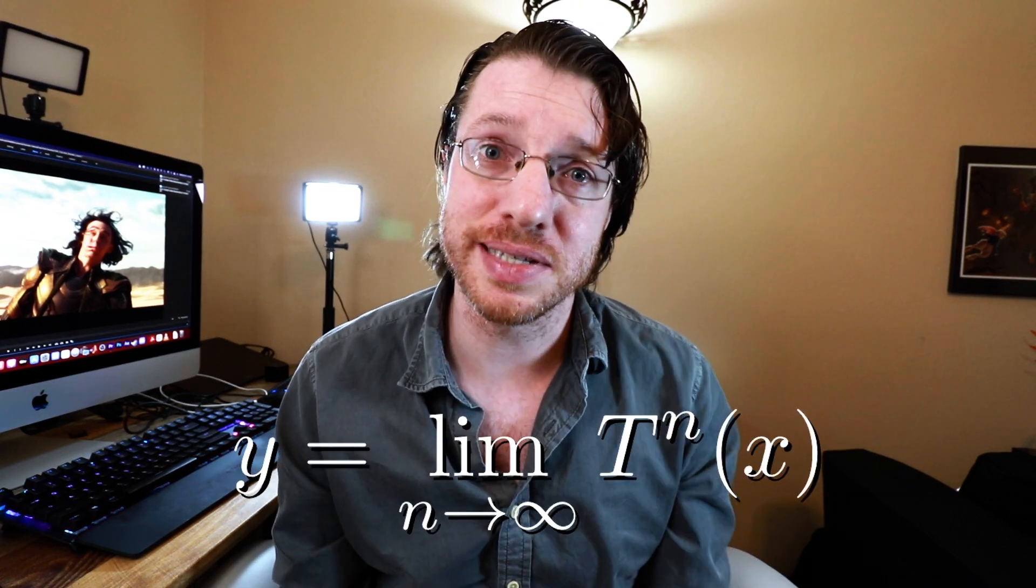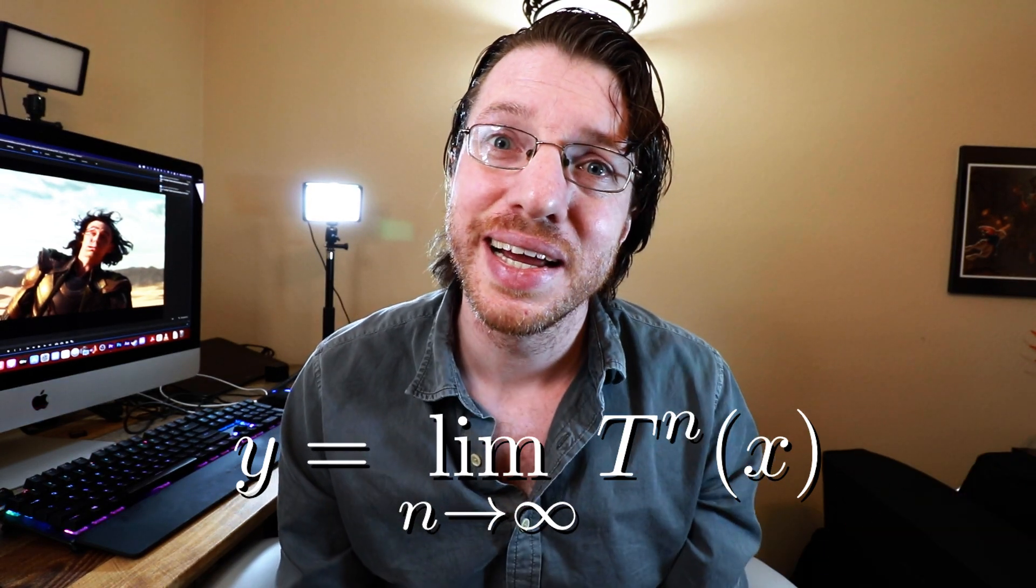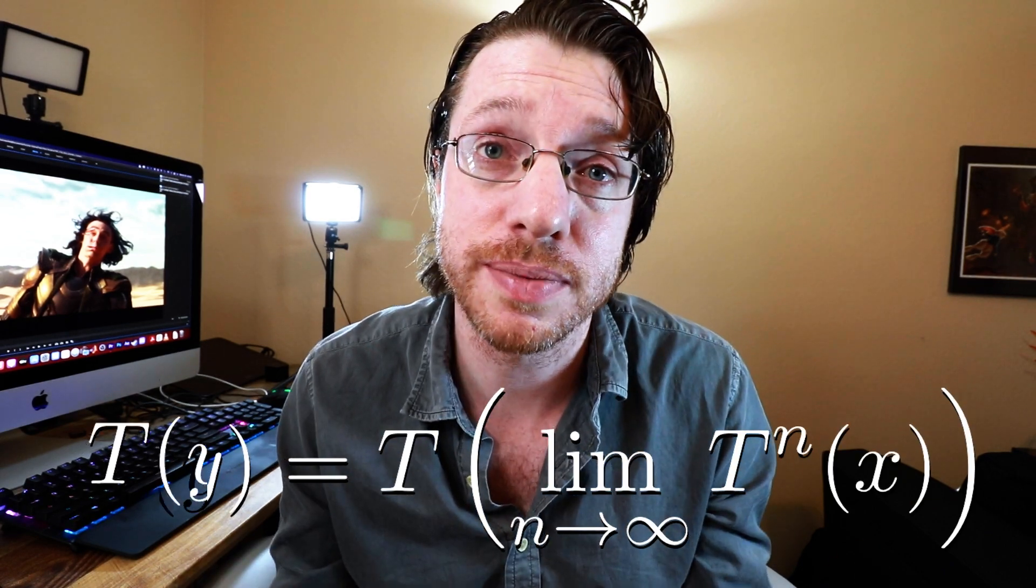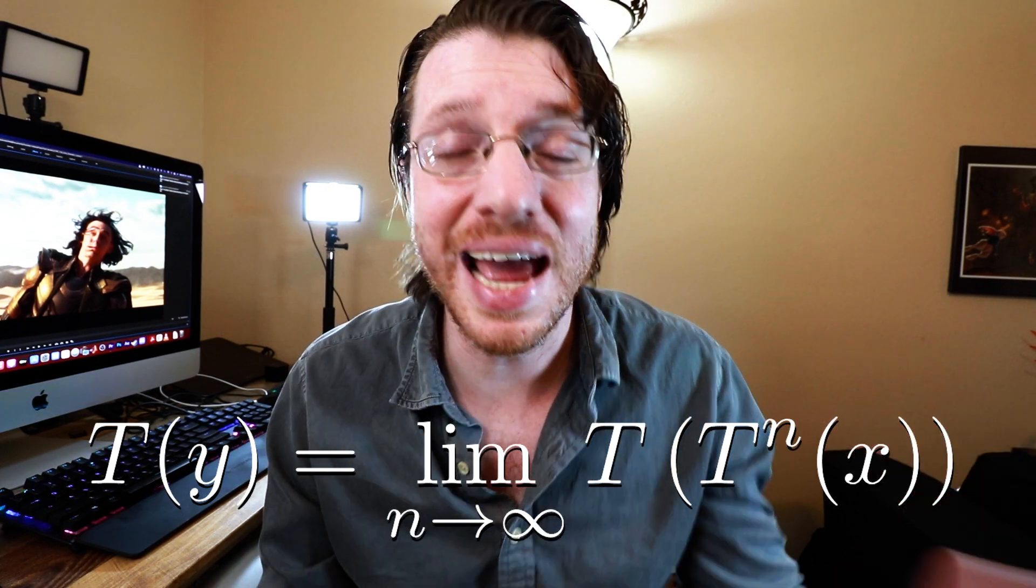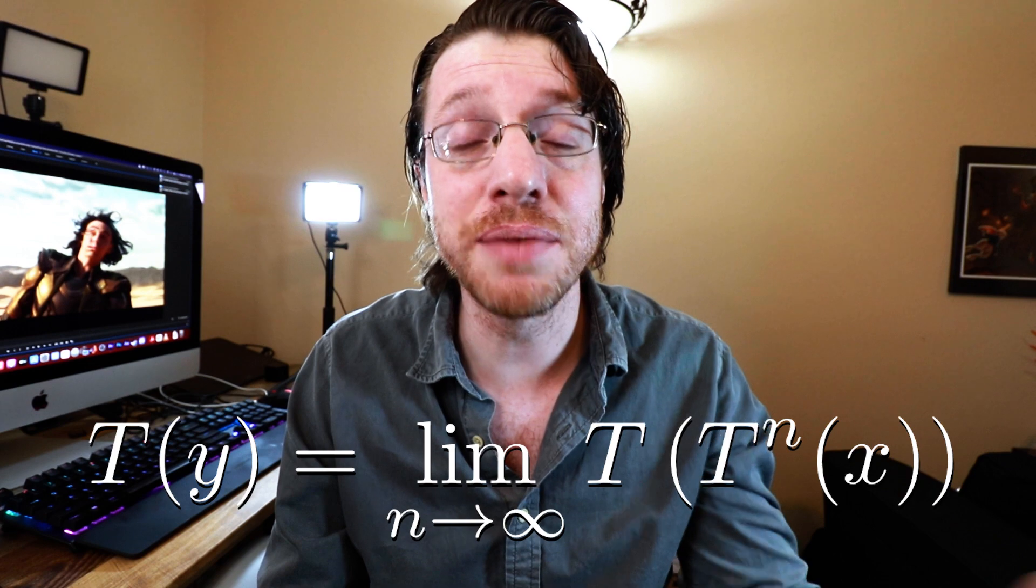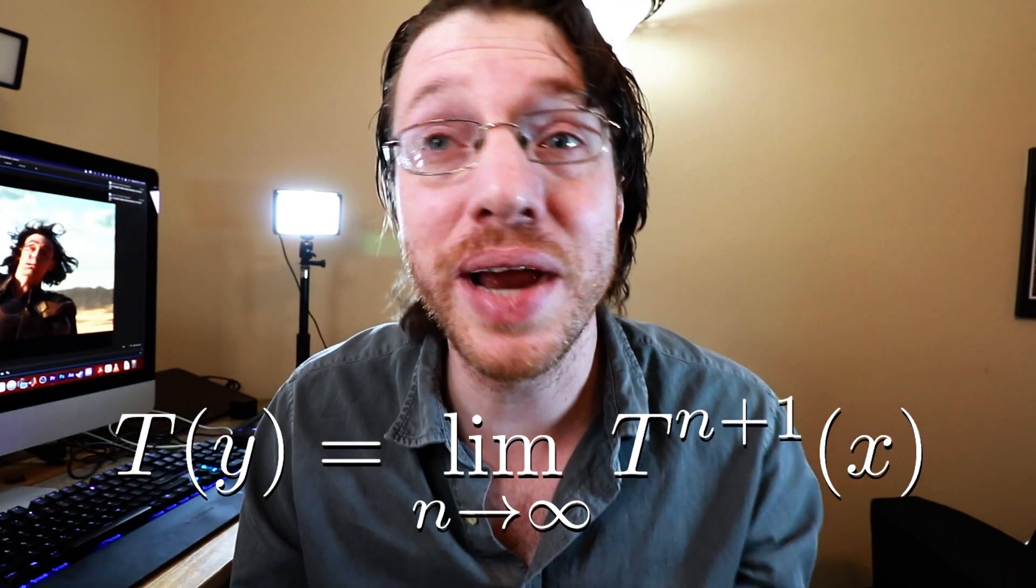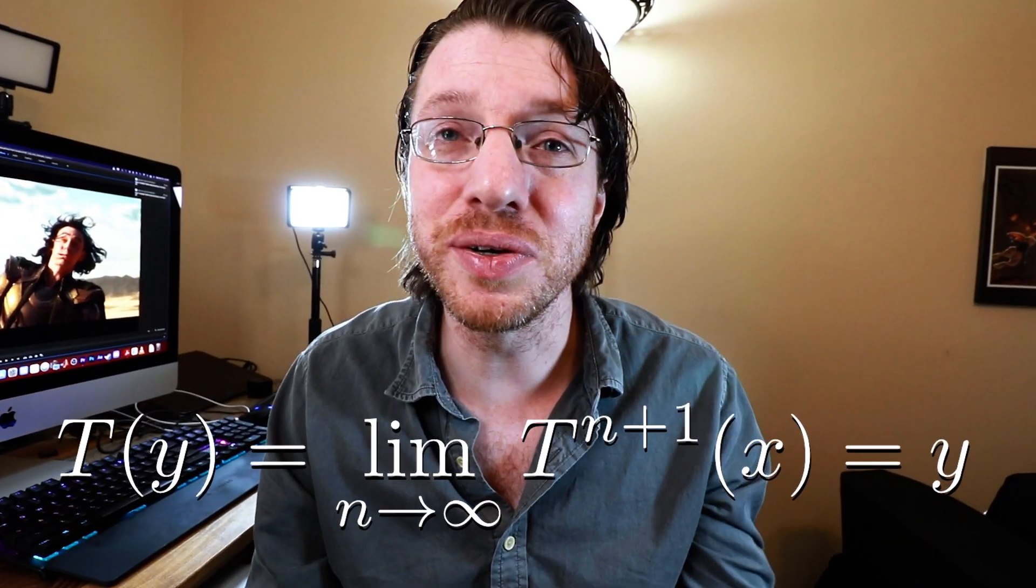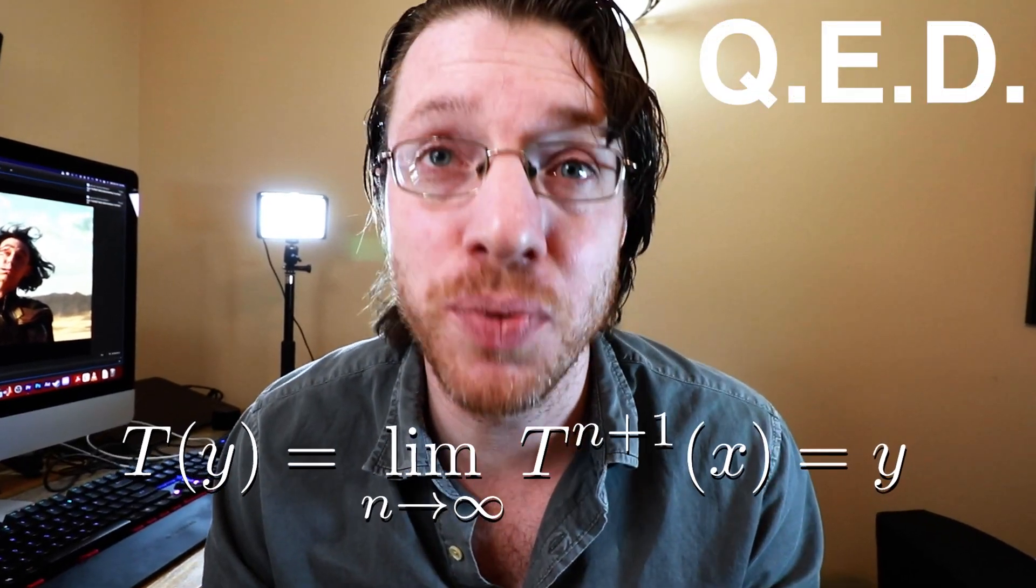So now we know that this limit exists. So now I can write this as the limit as n goes to infinity of T to the n of x. So now I can ask, what is T applied to this? Well, since T is a contractive mapping, that means it's also continuous. So that means I can pass a limit right through. So now what we see is that we have the limit as n goes to infinity of T to the n plus one of x. And well, that actually just is our whole sequence shifted over by one. And so it has the same limit. If we apply T to the limit of this sequence, then the result is the limit of that sequence. And so that's a fixed point. And we'll just call that limit y. And so today we have just proved the fixed point theorem.